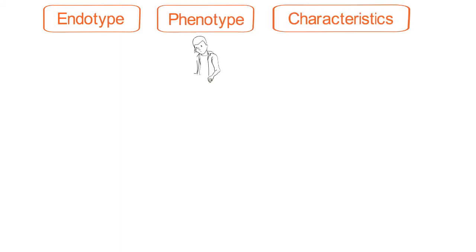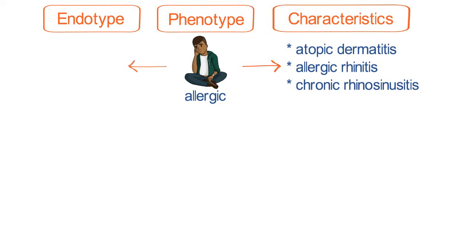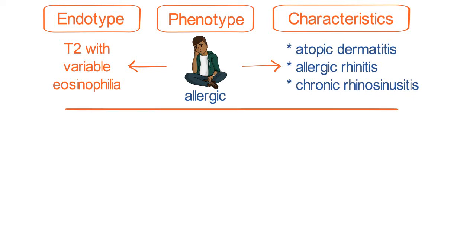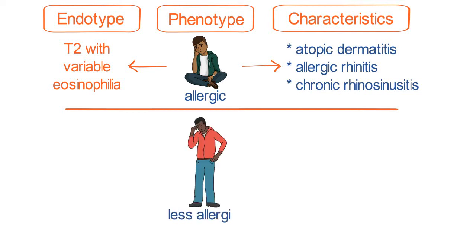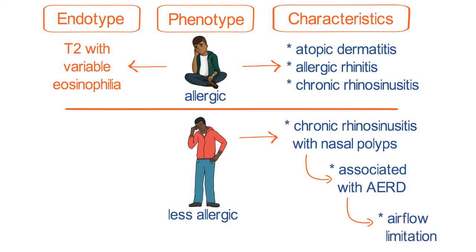The next slide shows examples of these endotypes and what sorts of phenotypes they drive. For instance, early-onset allergic asthma, which is a type of asthma we may be very familiar with, is also associated with a history of atopic dermatitis, allergic rhinitis, and may have chronic rhinosinusitis. This can be associated with variable eosinophilia. Another endotype is a kind of asthma that's late-onset in adults, less associated with allergy, and often develops in the setting of chronic rhinosinusitis with nasal polyps. There may be an association with aspirin-exacerbated respiratory disease, and this can be a very labile, severe asthma reflected by significant airflow limitation, often associated with significant eosinophilia.